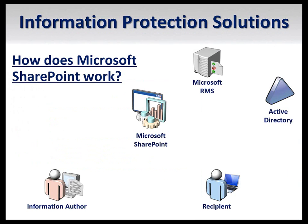So how does SharePoint information rights management work? First, the user uploads a document to a protected document library. Unprotected documents are stored in plain text. If the document has been previously protected by SharePoint, its protection is stripped and it is also stored in plain text. This enables the documents to be accessed for searching and indexing.